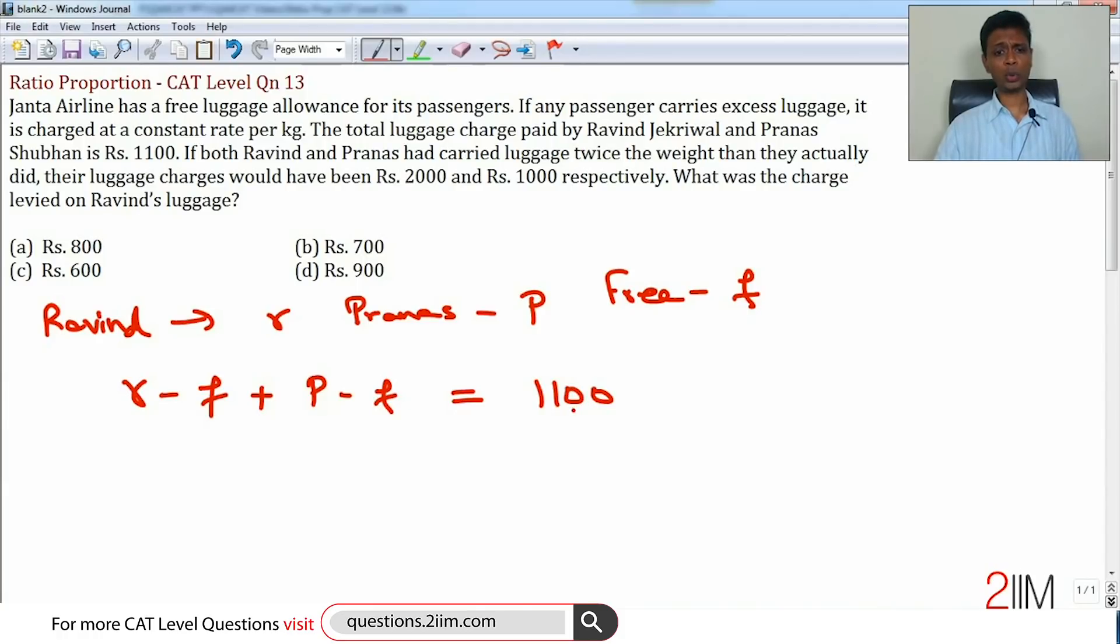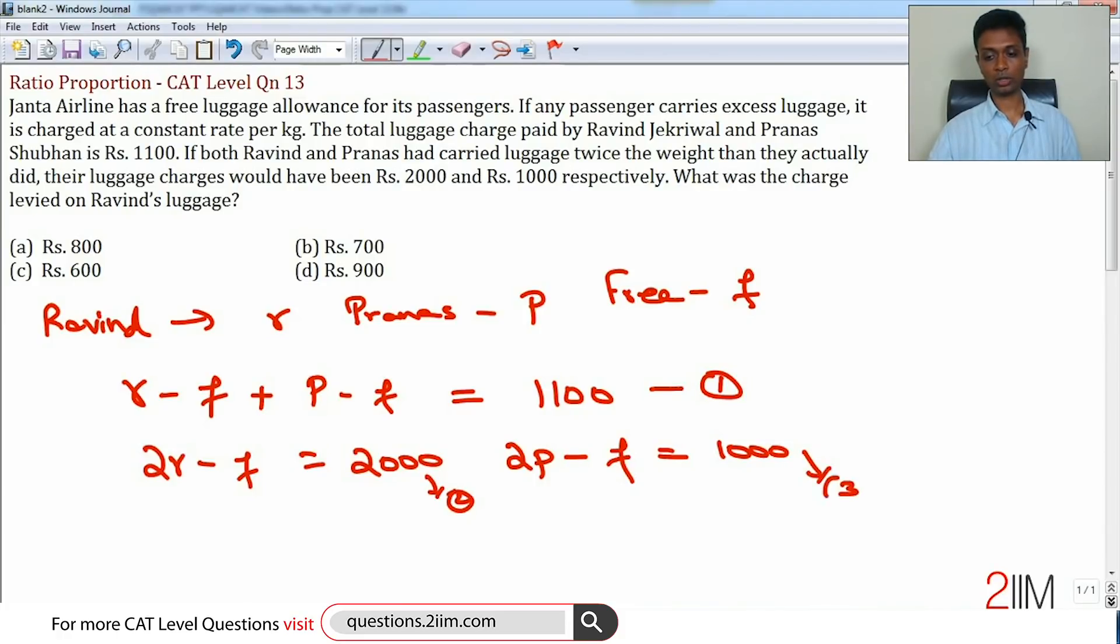Now when they carry twice the luggage, that means Ravind carries 2r. He still gets f free, so 2r minus f would equal 2000. Pranas carries 2p, he still gets only f free, so 2p minus f equals 1000. We call this as equation 1, equation 2, and equation 3.